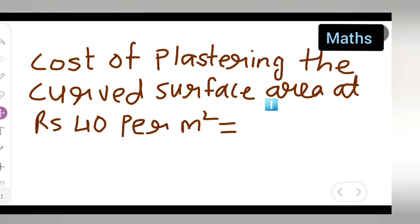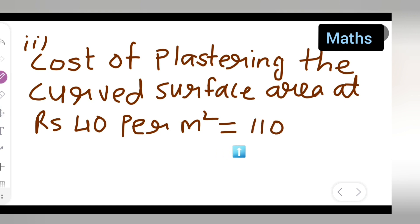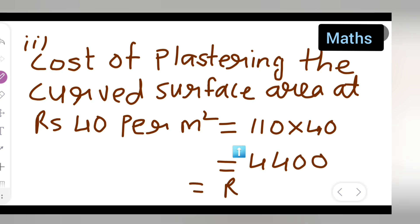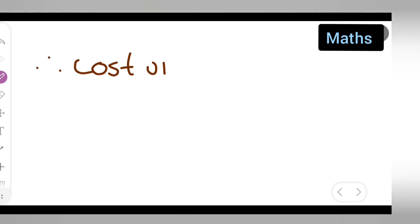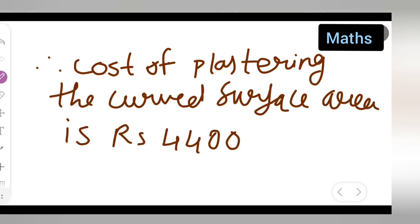Now for the second part: cost of plastering the curved surface area at rupees 40 per meter square. Cost = 110 × 40 = rupees 4400. Therefore, the cost of plastering the curved surface area is rupees 4400. I hope you have understood Exercise 13.2 Question Number 7. Thanks for watching.